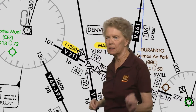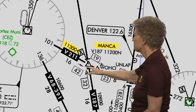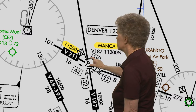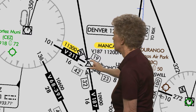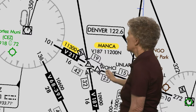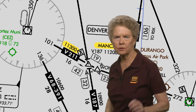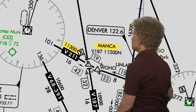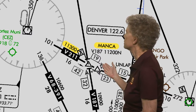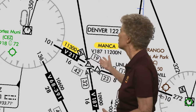Continuing southbound, you're looking for Manca intersection where you switch over to Victor 211 going east into Durango. Manca has those dinner plates on either side of the intersection to indicate an altitude change, and the minimum en route altitude on Victor 211 has gone down to 11,300 feet — and that altitude applies all the way into the Durango VOR. So the highest minimum en route altitude on the entire route of flight is the 15,000 feet MSL found before and after Herm intersection.